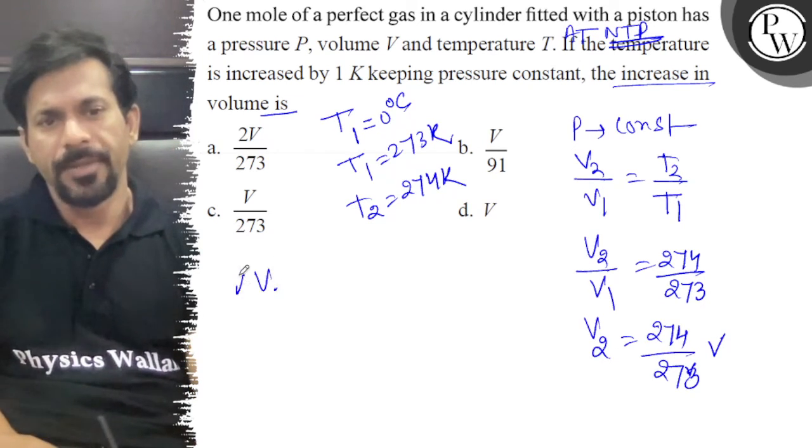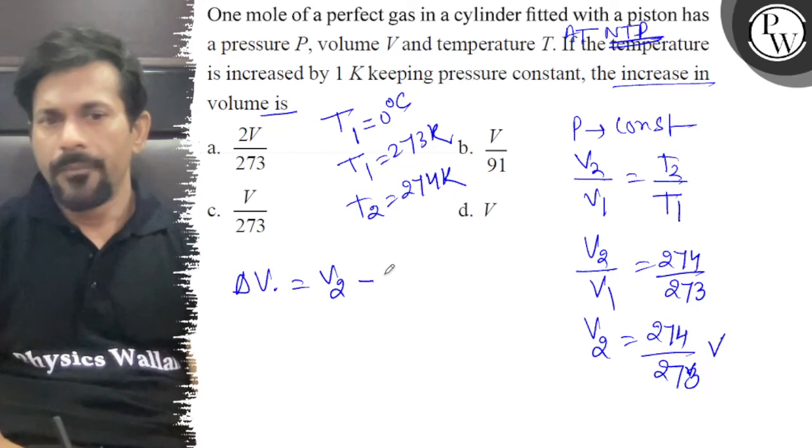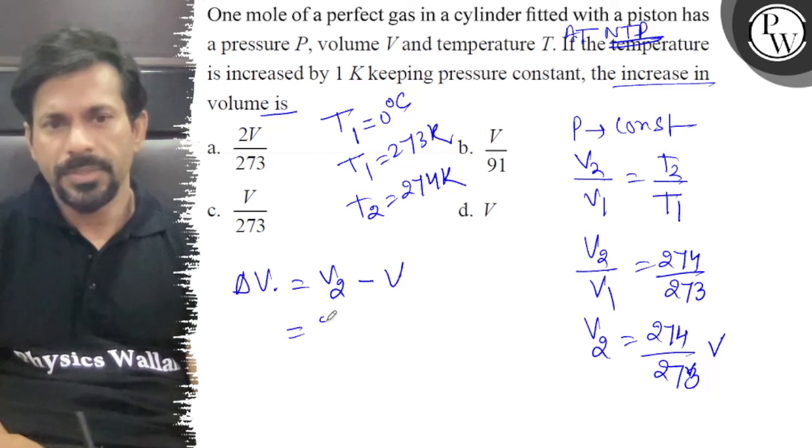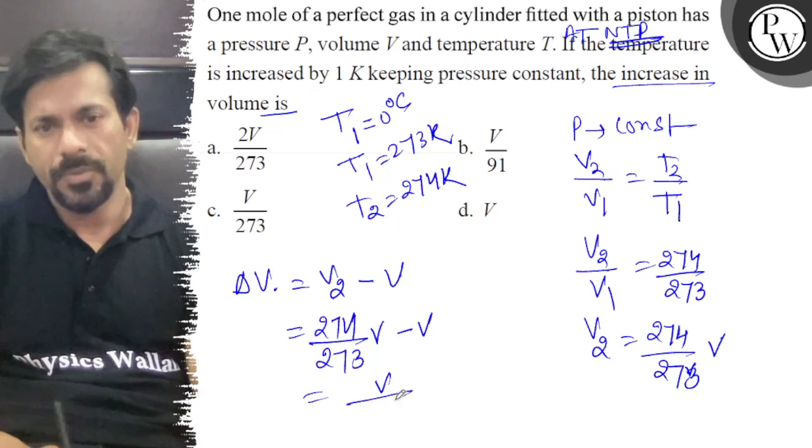That is ΔV. So V2 minus V1 equals 274V upon 273 minus V, which equals V upon 273.